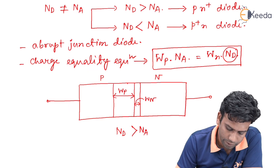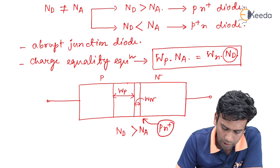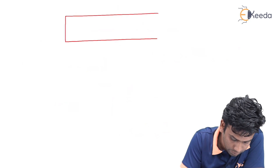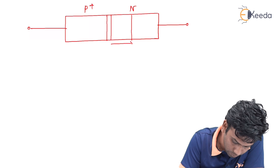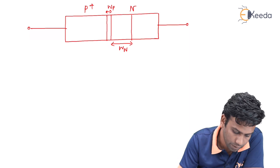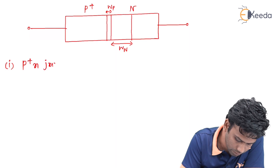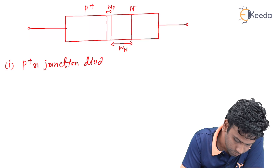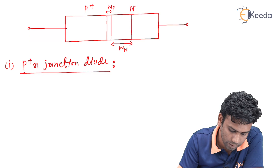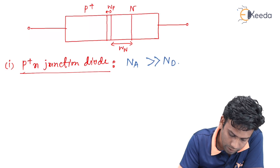A PN⁺ diode will have a depletion layer that extends mostly into the P side. Similarly, if we draw a P⁺N diode, the depletion region extends mostly into the N side, where the P type is highly doped compared to the N side. Now let us consider a P⁺N junction diode, in which the N_A concentration is much larger than the donor concentration N_D.